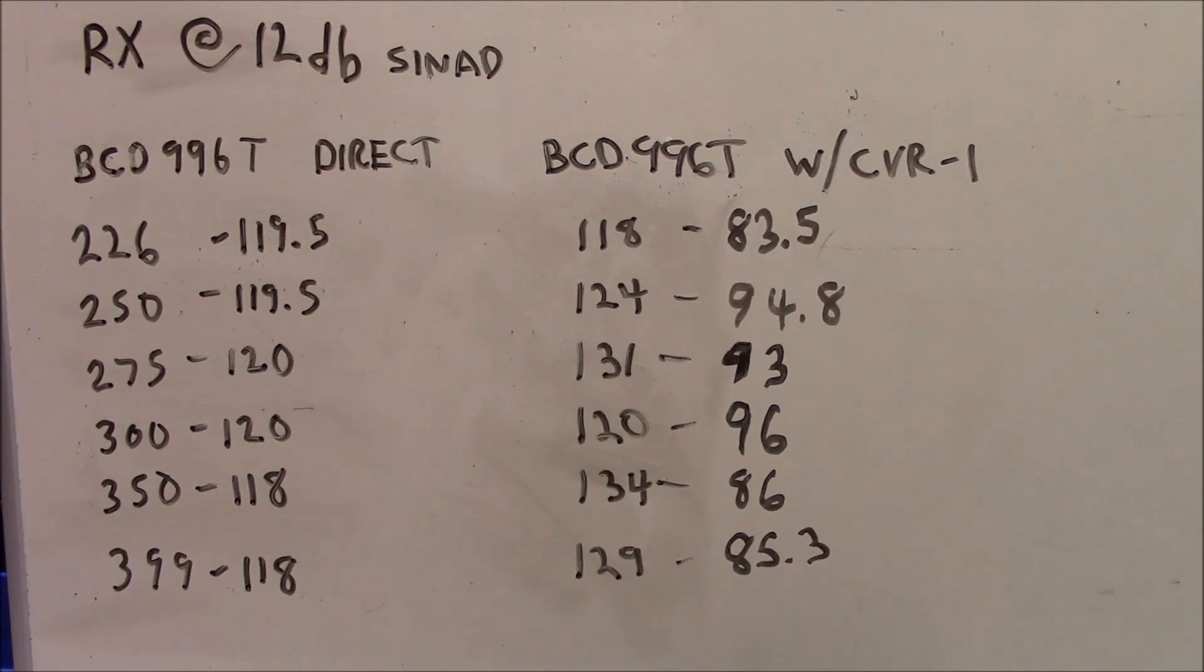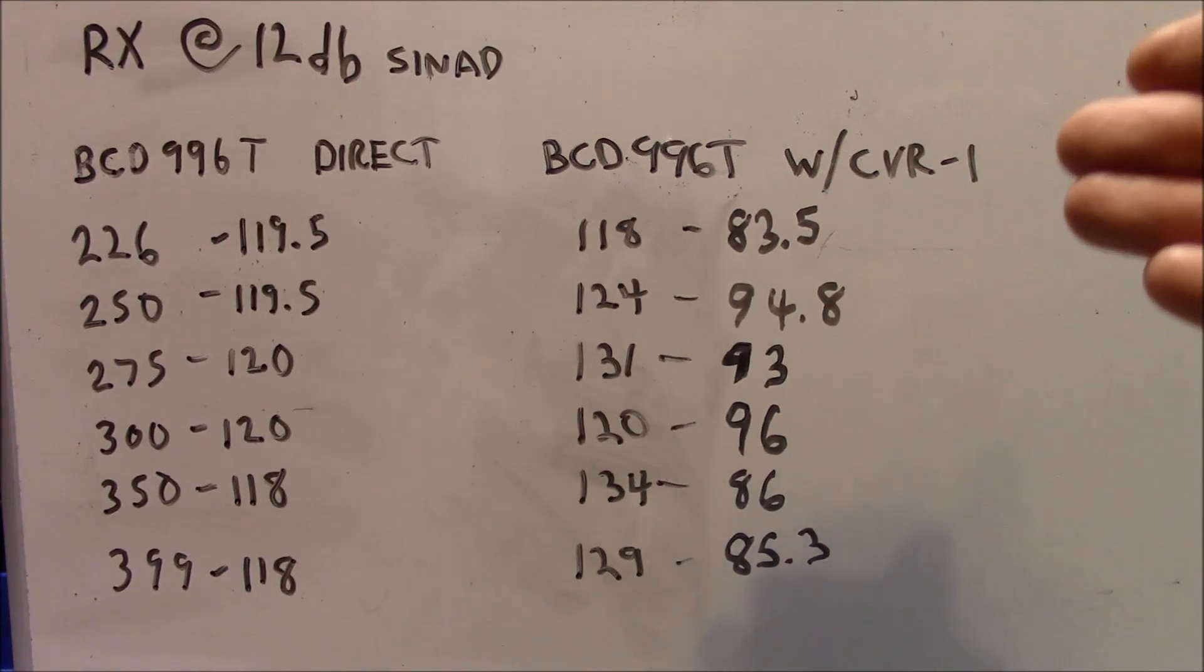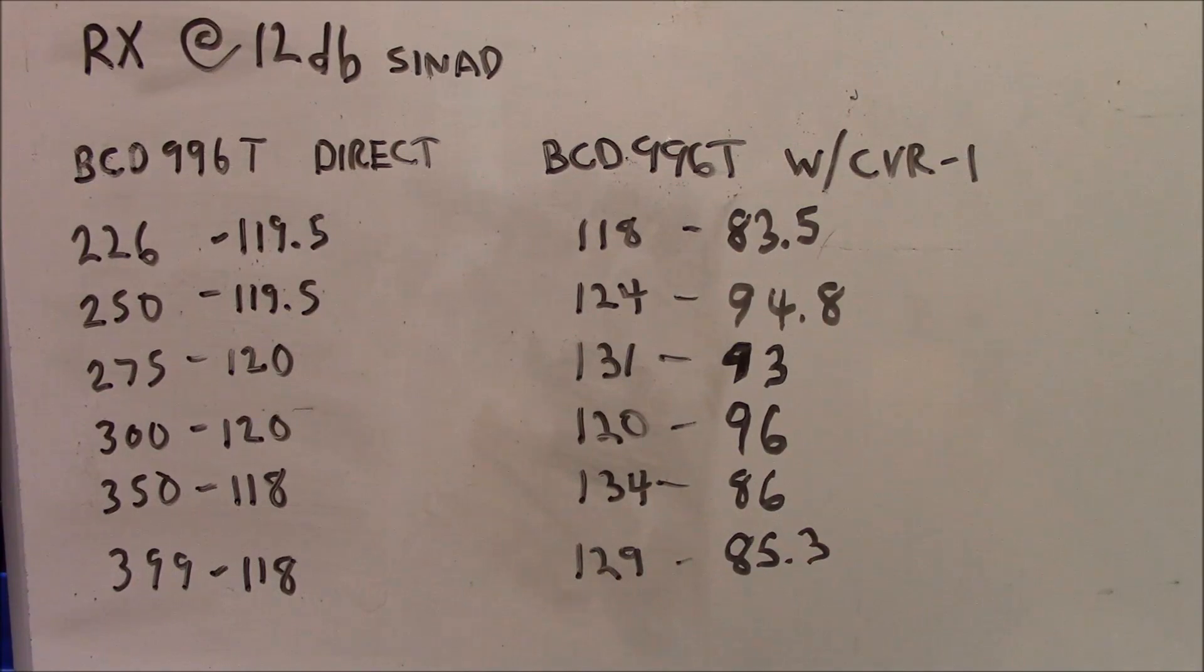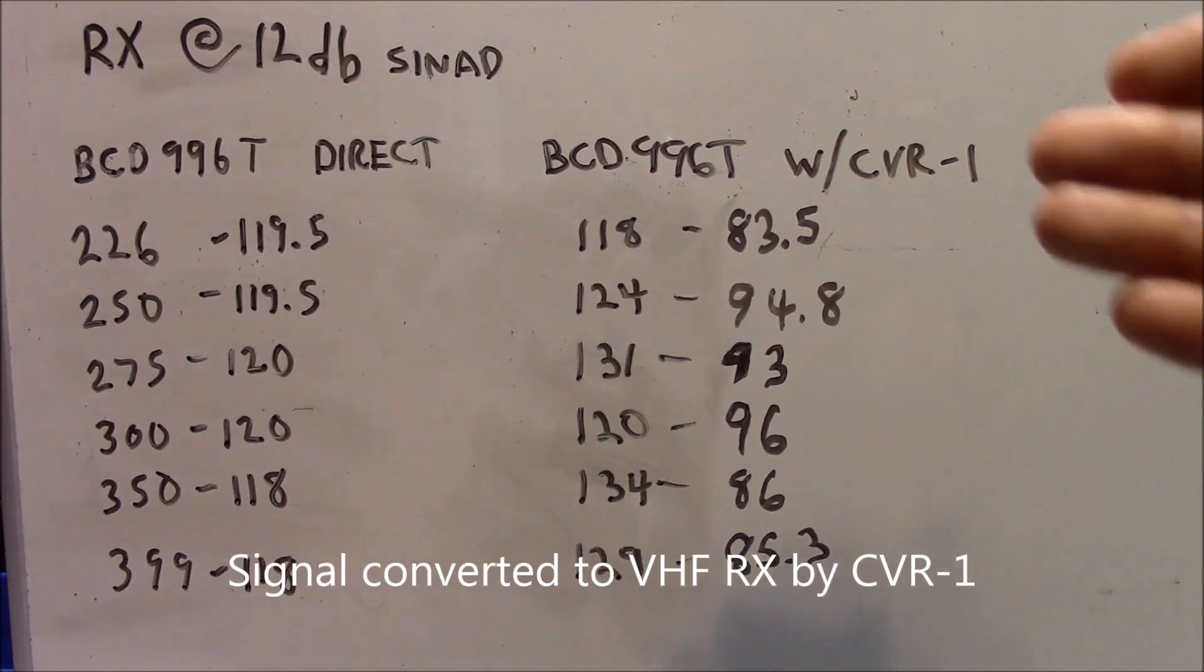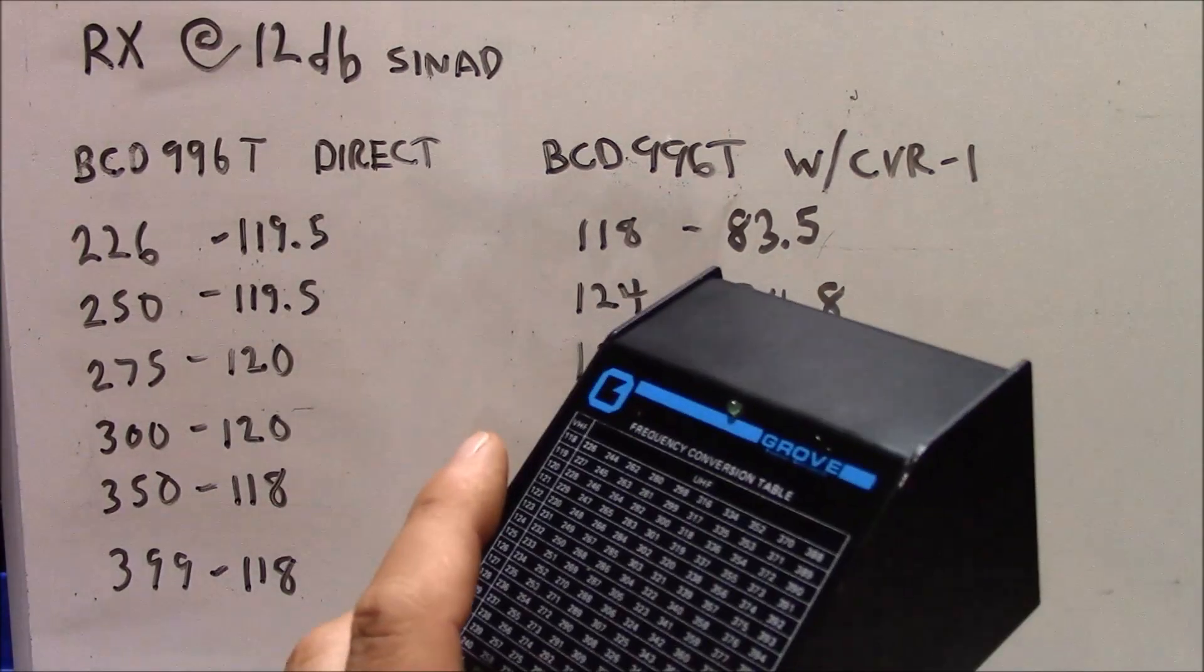And these are the results I came up with here on the left. You can see this is when I'm feeding the UHF frequencies directly into the receiver and the amount of signal I had to send to it to provide that result. And on the right-hand side here, you can see this is how much signal I had to send to the CVR-1 to provide the same level of signal. And it's easy to see that it requires a considerably larger signal to be able to provide the same kind of audio quality with this device.